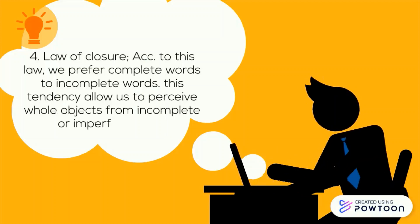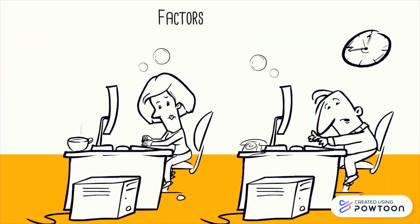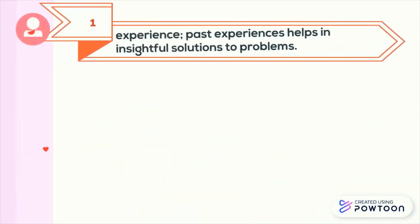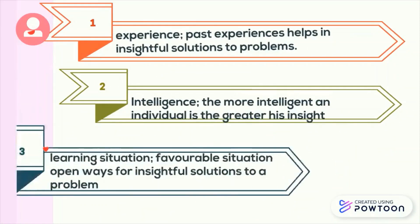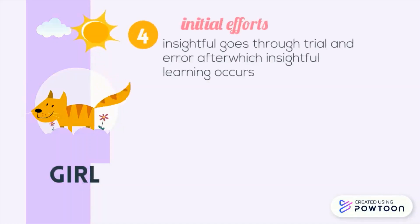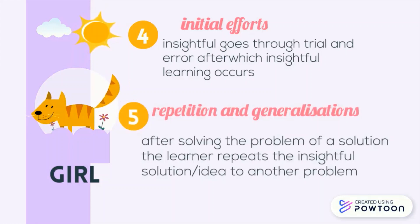Now let us see the factors influencing insight learning. Number one is experience — our past experiences help in finding insightful solutions to problems. Number two is intelligence — the more intelligent an individual is, the greater his insight. Number three is the learning situation — favorable situations open ways for insightful solutions. Number four is initial efforts — insightful learning goes through trial and error, after which insightful learning occurs. Number five is repetition and generalization — after solving a problem, the learner repeats the insightful solution or idea to apply it to another problem.